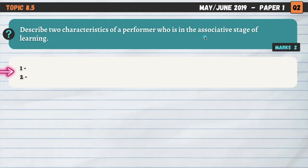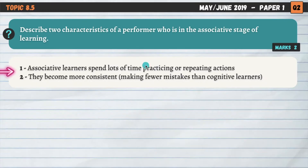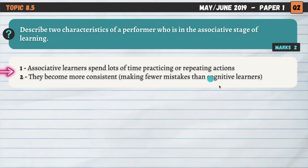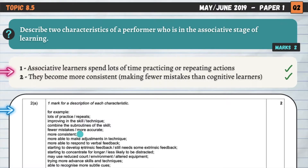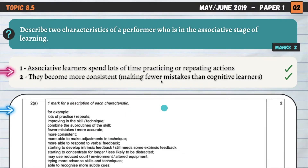There are three stages of learning: the cognitive, associative, and autonomous stage. The associative is the second stage, otherwise known as the practice stage. Associative learners spend lots of time practising or repeating actions. They learned the basics in the cognitive stage, and now in the associative stage they practise and repeat the action, becoming more proficient and consistent over time. They also make fewer mistakes than cognitive learners.